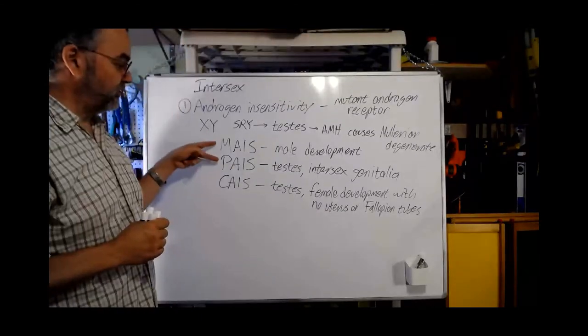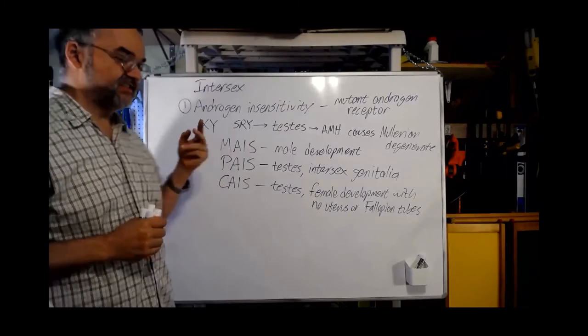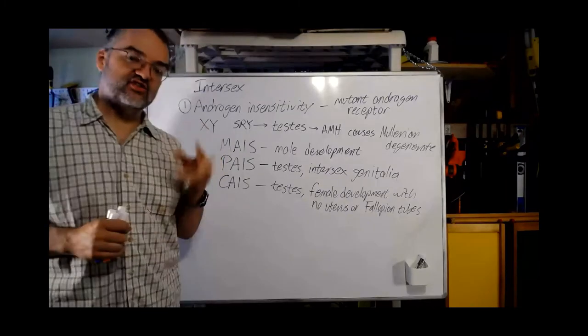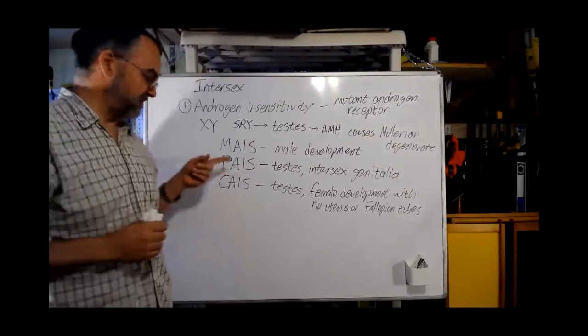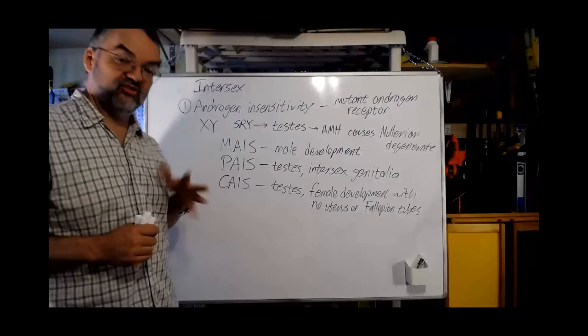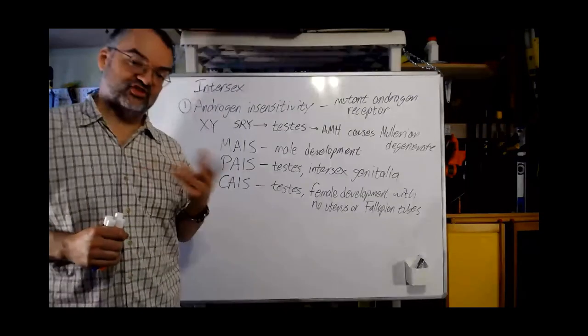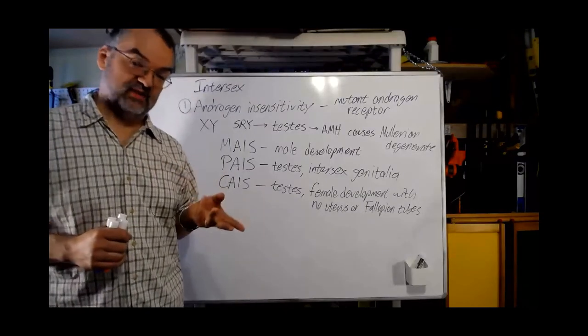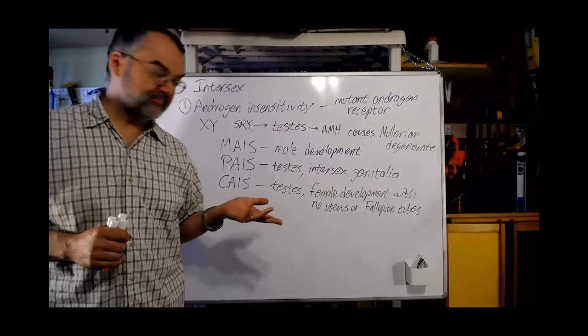Most individuals with complete androgen insensitivity have female gender identity and live as females, because they are women. People with mild androgen insensitivity usually have male gender identity, and people with partial androgen insensitivity — it depends; sometimes their gender identity is ambiguous, sometimes female, sometimes male.